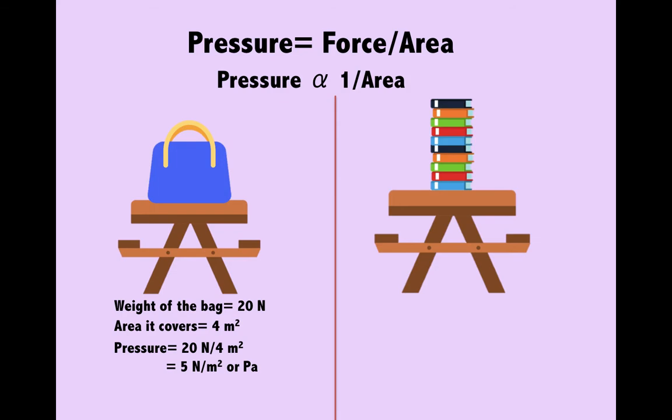So that's equal to 20 Newtons divided by 4 meter square. Now I hope you're able to see where the Newtons per meter square comes from. So the numerical values cancel out, 20 and 4 cancel out to make 5 and we are left with just Newton per meter square. That's how the unit comes and the fancy term for Newtons per meter square is Pascal. So the pressure applied here is 5 Pascal.